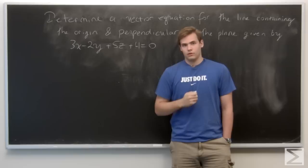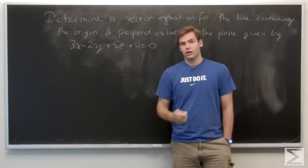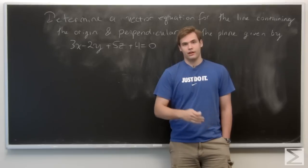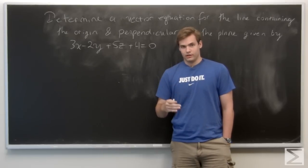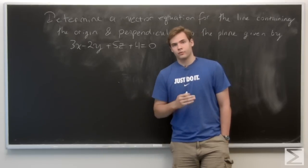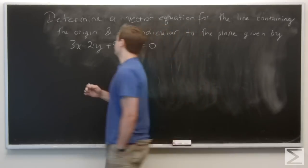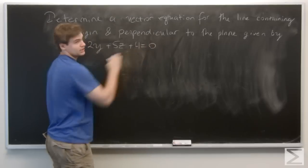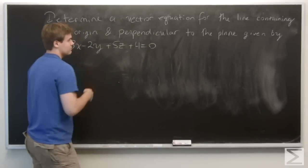So recall that the information we need to determine a line is a point on the line and then a vector parallel to the direction of the line. We have our point - we know it contains the origin. We want to now determine the vector.